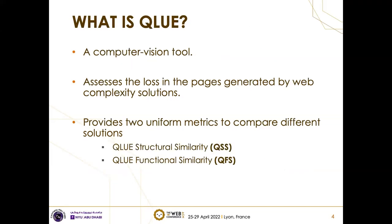In this paper we propose a computer vision tool that assesses the quality of web pages both in terms of the structure of the web page, giving a structural quality similarity score (QSS), and also assesses the functional similarity in a score called QFS. Both of these check the retention of quality of the web page — all complexity solutions have an original version and a simplified version of the page.